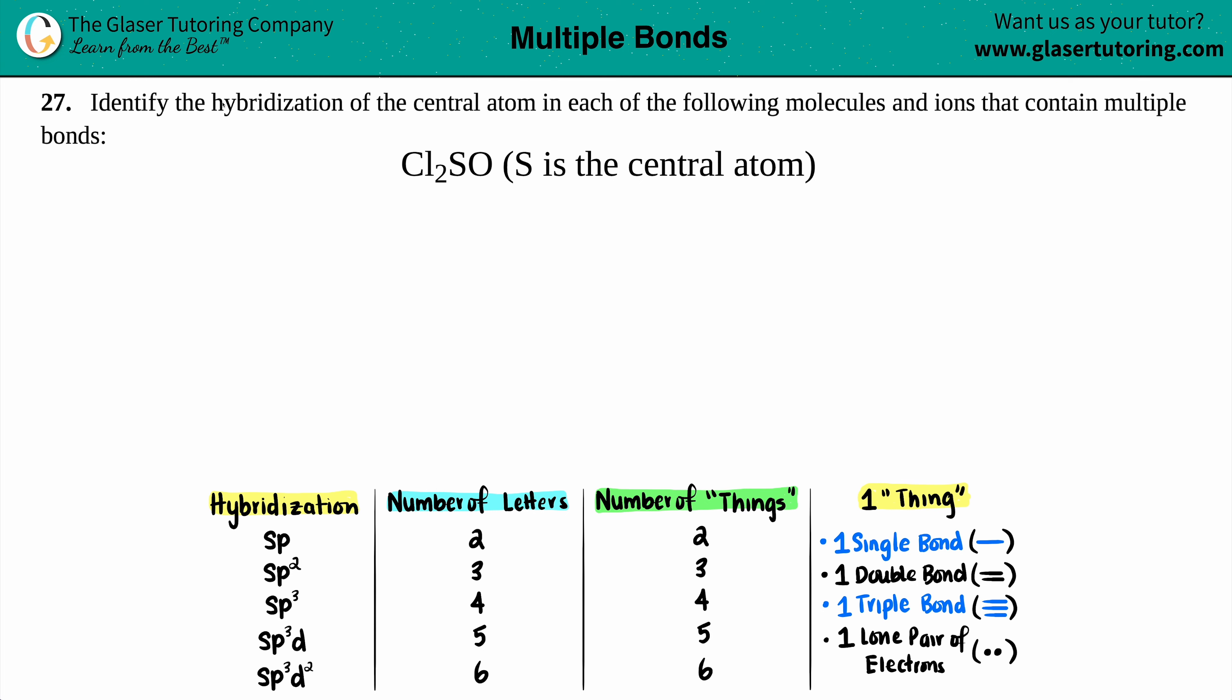Number 27: Identify the hybridization of the central atom in each of the following molecules and ions that contain multiple bonds. We have Cl2SO, and they give us a hint that sulfur is the central atom. Whenever you're trying to find hybridization, specifically the hybridization of sulfur, the easiest method is to find the Lewis structure first.